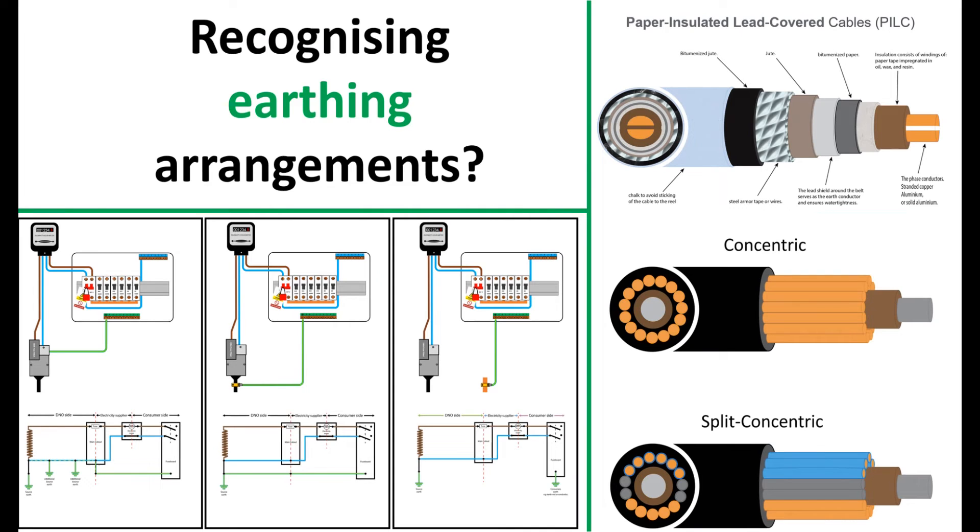If you need help in identifying the different earthing arrangements like TNCS, TNS or TT, as well as concentric, split concentric and paper insulated lead covered cables, then please watch my video that aims to aid you in understanding the differences. It will also talk you through the basics on how to select the correct earthing conductor size.